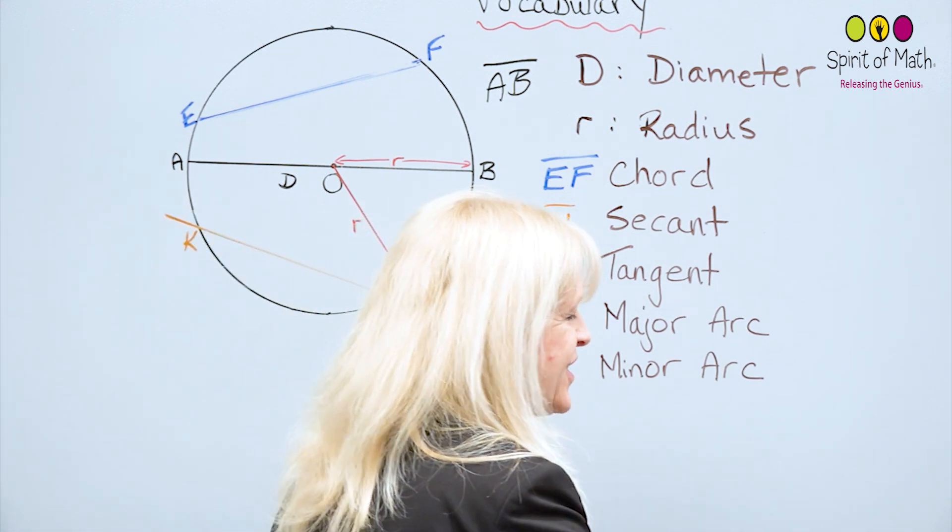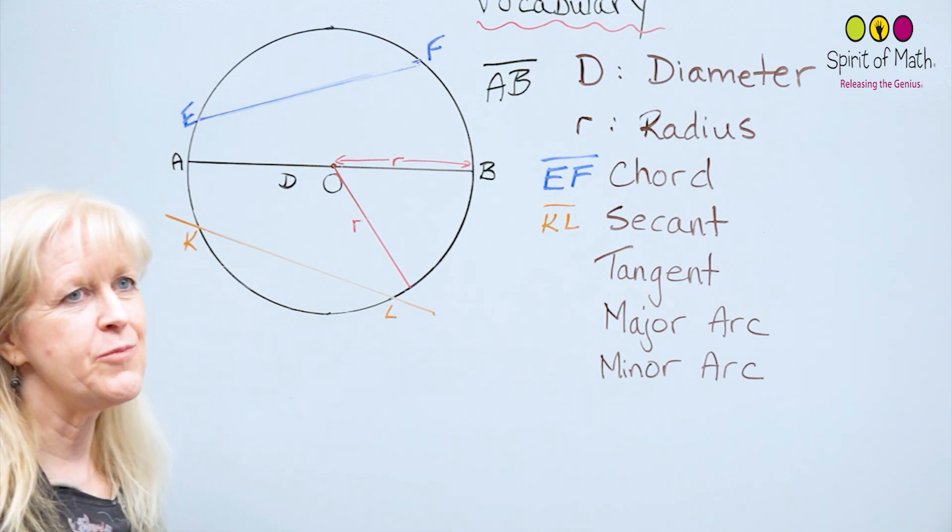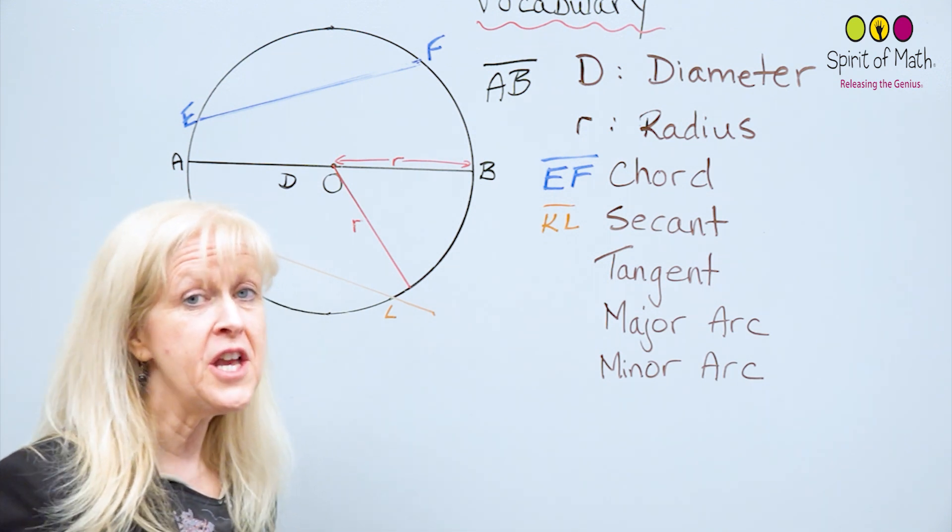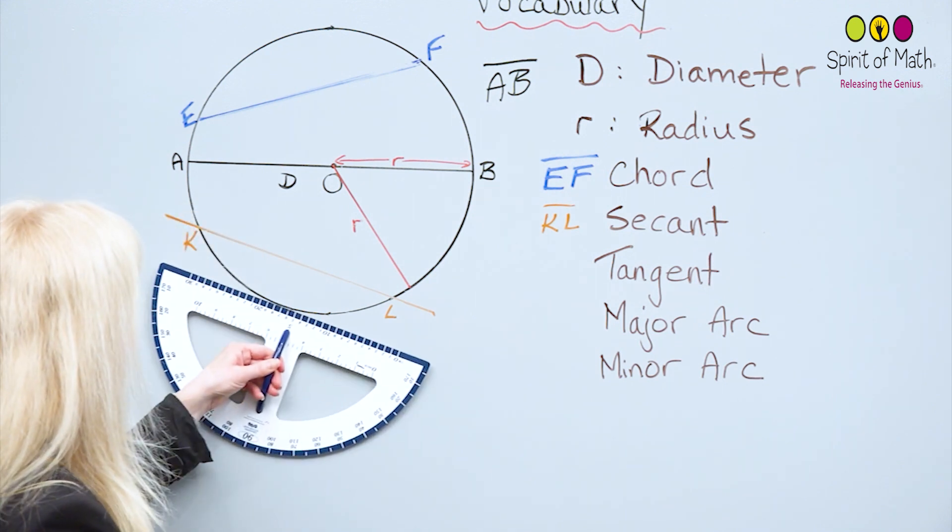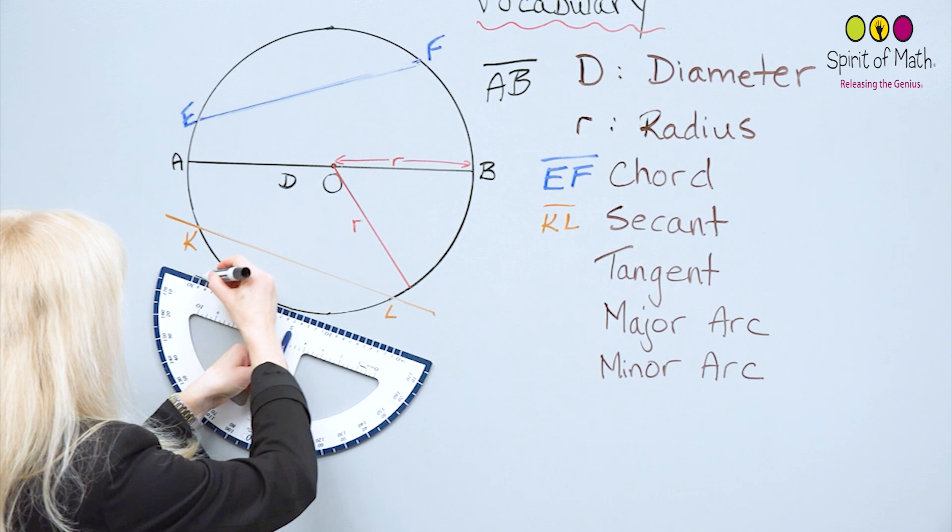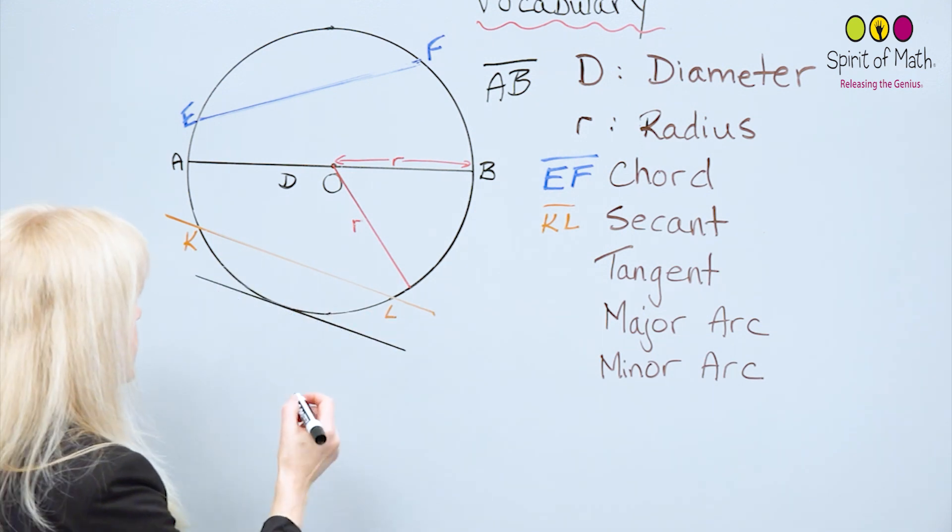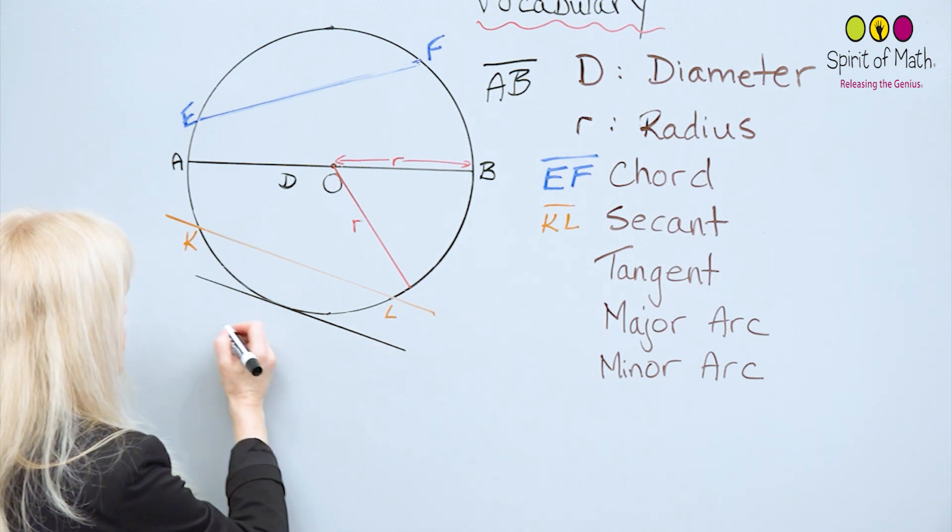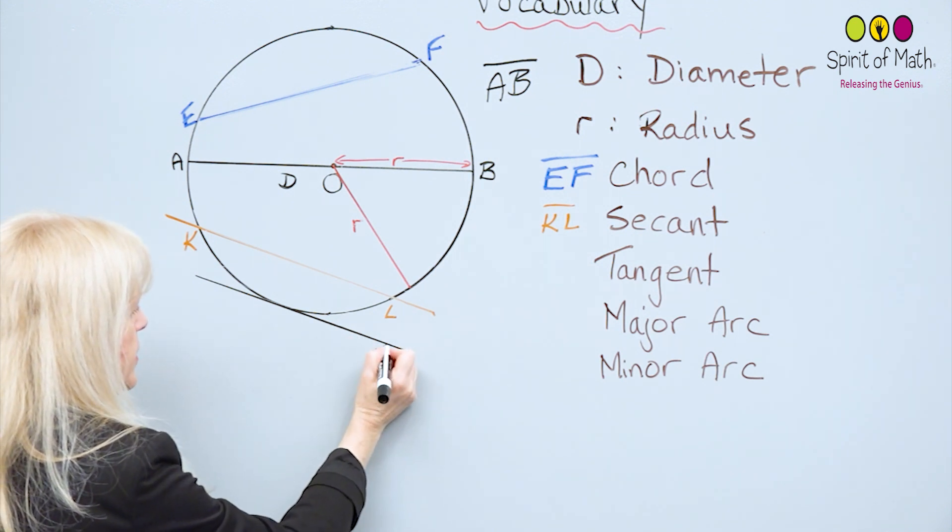Then after that, you have something called a tangent. You'll see when you do trigonometry, and you talk about it with slope, there's a lot of neat things that happen with a tangent. The tangent goes just like that. So this is our tangent, and I'm going to label this one tangent.